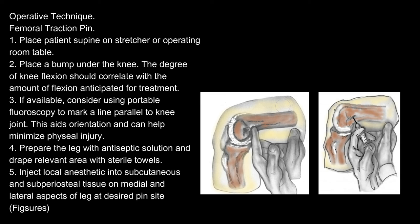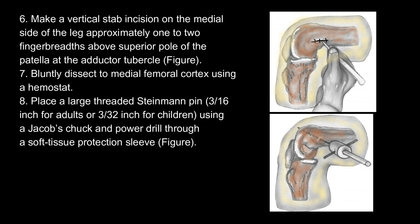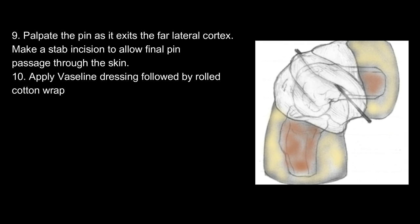5. Inject local anesthetic into subcutaneous and subperiosteal tissue on medial and lateral aspects of the leg at the desired pin site. 6. Make a vertical stab incision on the medial side of the leg approximately 1 to 2 finger breadths above the superior pole of the patella at the adductor tubercle. 7. Bluntly dissect to the medial femoral cortex using a hemostat. 8. Place a large threaded Steinman pin — 3/16 inch for adults or 3/32 inch for children — using a Jacob's chuck and power drill through a soft tissue protection sleeve. 9. Palpate the pin as it exits the far lateral cortex. Make a stab incision to allow final pin passage through the skin.